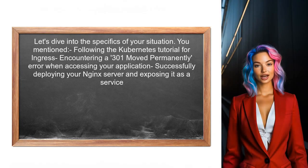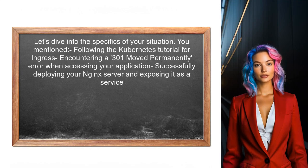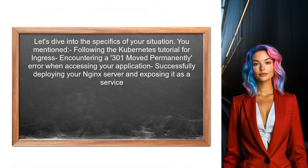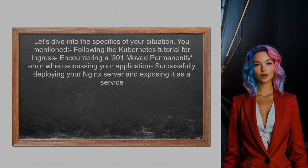Let's dive into the specifics of your situation. You mentioned that you followed the Kubernetes tutorial for ingress, but when you try to access your application, you encounter a 301 moved permanently error. This can be quite perplexing, especially after successfully deploying your Nginx server and exposing it as a service.